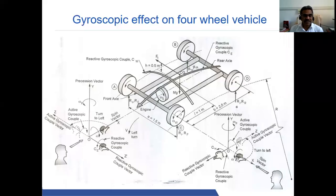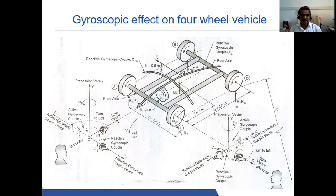Today we are going to discuss the gyroscopic effect on four-wheeled vehicles. This is a four-wheeled vehicle taking a left turn. It has four wheels and an engine.